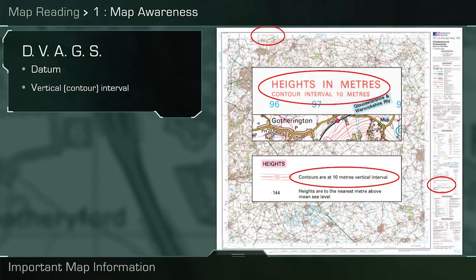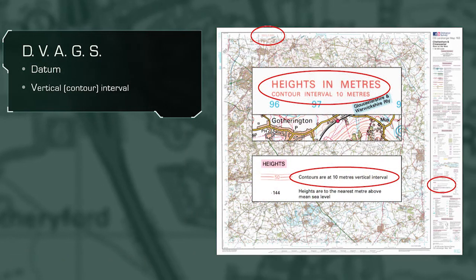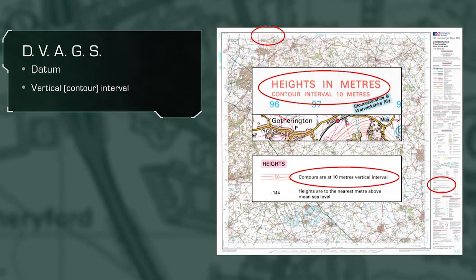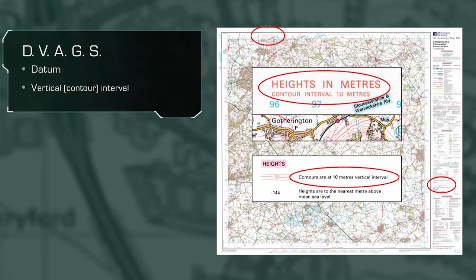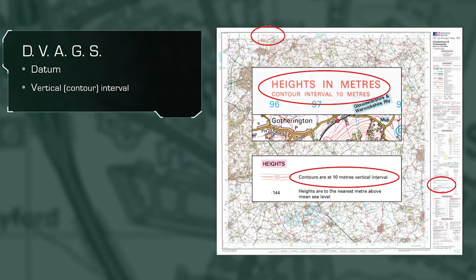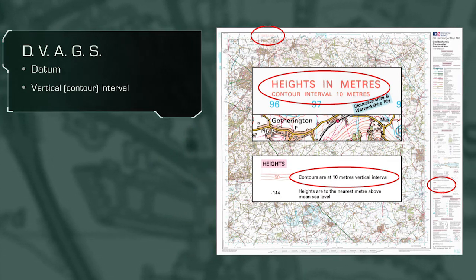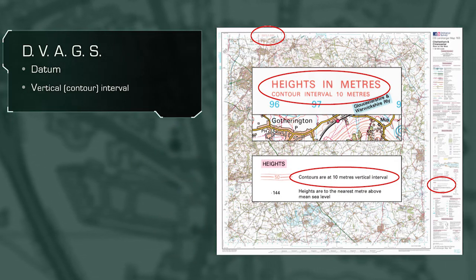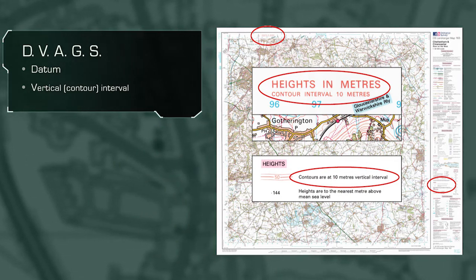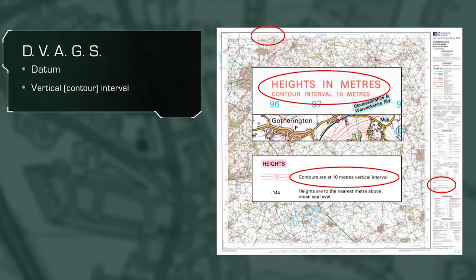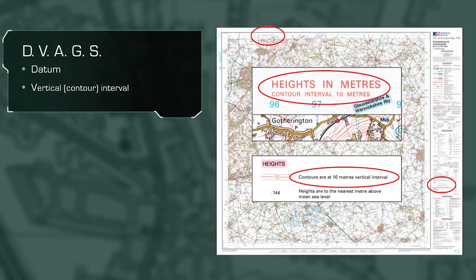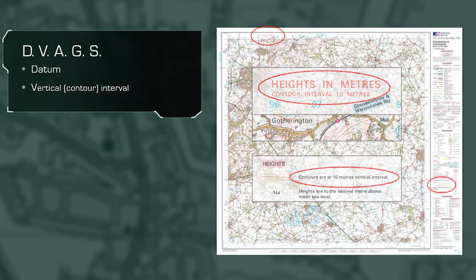V is for vertical interval, also referred to as a contour, or the difference in height between contours. The vertical interval can be found in the areas circled in red on any typical ordnance survey map.